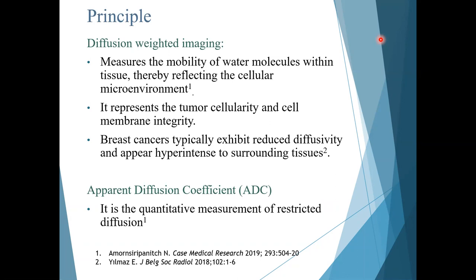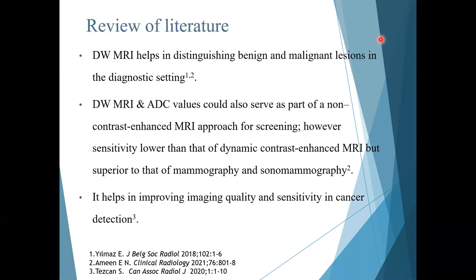Diffusion-weighted MRI measures the mobility of water molecules within tissue, thereby reflecting the cellular microenvironment. It represents tumor cellularity and cell membrane integrity. Breast cancers typically exhibit reduced diffusivity and appear hyper-intense to surrounding tissues. Apparent diffusion coefficient is a quantitative measurement of restricted diffusion seen in lesions. Diffusion-weighted MRI helps in distinguishing benign and malignant lesions in the diagnostic setting.